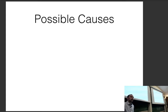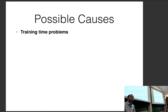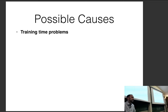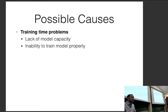There are four categories of possible causes of problems. The first is training time problems — your model cannot learn to decrease the loss on the training data. I'm not talking about whether your test accuracy goes up or your test loss goes down; I'm talking about whether your training loss goes down. Reasons include lack of model capacity, inability to train properly due to bad optimizers or batching strategies.